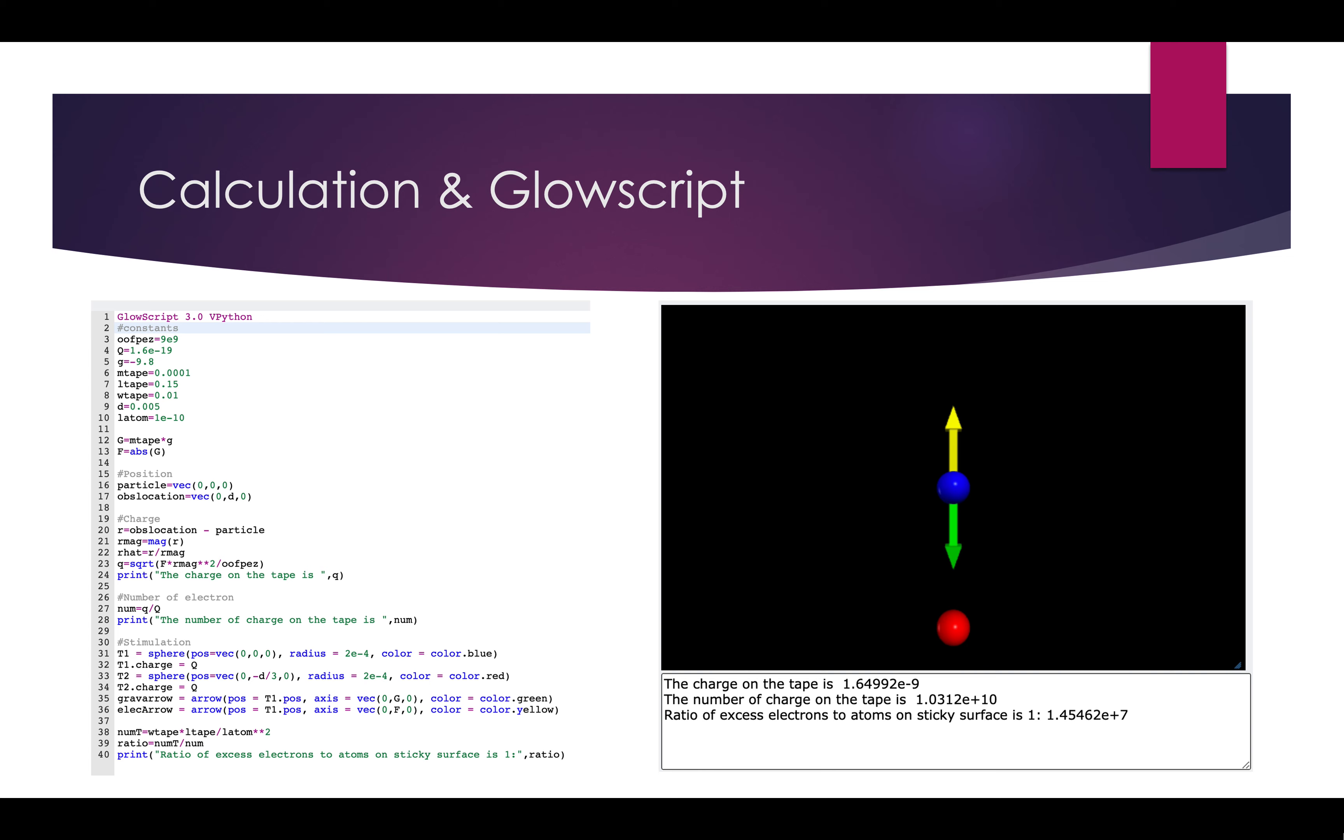And in the calculation for charge, we calculate the distance first, which is R is equal to the observation location minus the particle. So, it's D on the y-axis. And we have R magnitude, R_mag is equal to the magnitude of R. R_hat is equal to R divided by R_mag, which is the unit vector. Q here, we use square root of F times R_mag squared divided by the Coulomb's constant, because we know that F is equal to K Q1 Q2 divided by R squared.